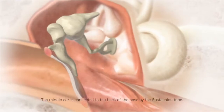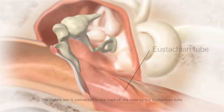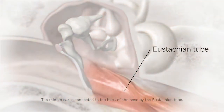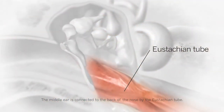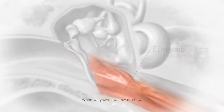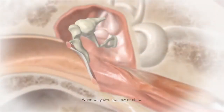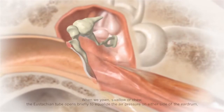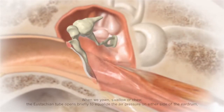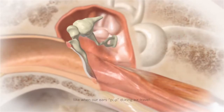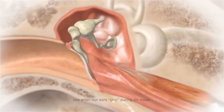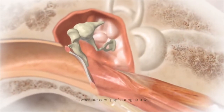The middle ear is connected to the back of the nose by the eustachian tube. When we yawn, swallow, or chew, the eustachian tube opens briefly to equalize the air pressure on either side of the eardrum, like when our ears pop during air travel.